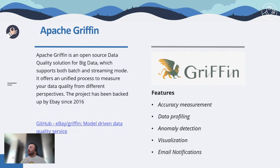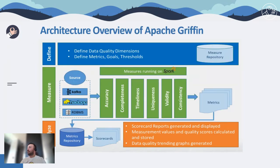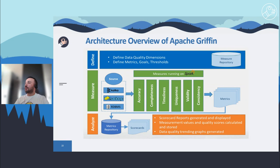The features of Apache Griffin include accuracy measurement — an assessment of dataset accuracy compared to a verifiable source; data profiling — analysis and assessment of data values in terms of consistency, uniqueness, and logic; anomaly detection — a pre-built algorithmic function for identifying events that don't conform to an expected pattern; visualization — dashboards reporting the state of data quality; and email notification as the alerting mechanism. Griffin has three parts: Define, responsible for defining the dimensions of data quality statistics; Measure, responsible for implementing statistical tasks and generating results; and Analyze, responsible for storage and display of statistical results.